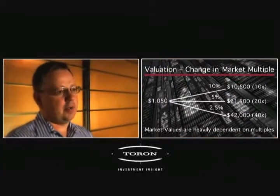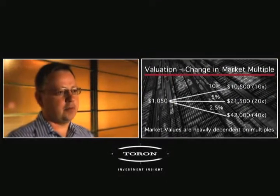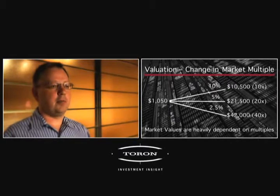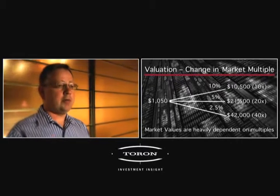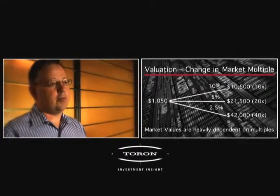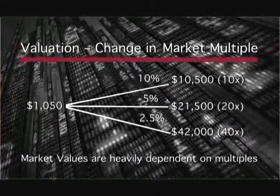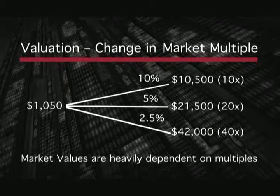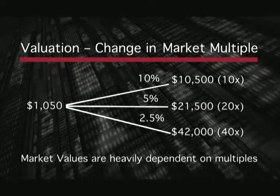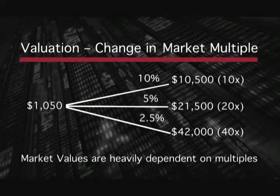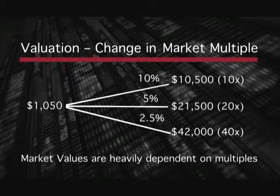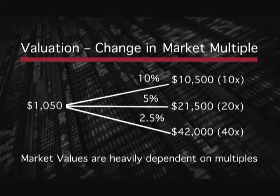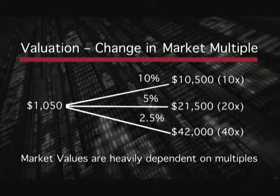Now turning to slide number three, we're going to take that earnings stream from slide two and apply different market multiples — what individuals are willing to pay for that earnings stream and its growth. Looking at that $1,050: if people want a 10% rate of return, or a 10 times market multiple, that investment is worth only $10,500 — fully 50% less than the value in slide two. At 5% or 20 times multiple, the investment is still worth $21,500. And if we move to 2.5% or a 40 times valuation — something we saw in the year 2000 — that company would be worth $42,000.